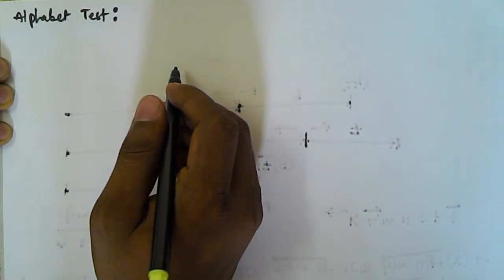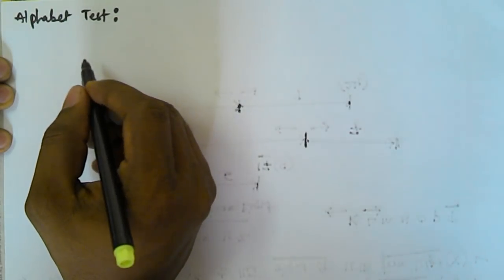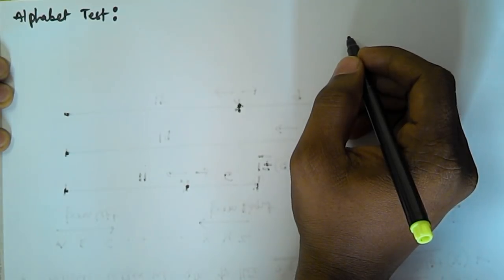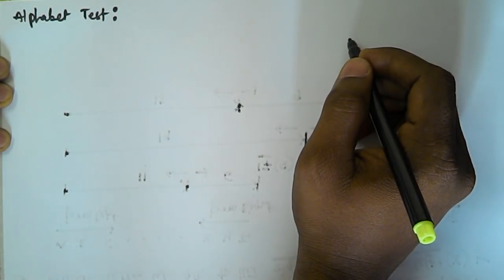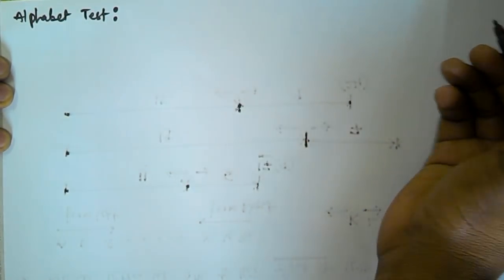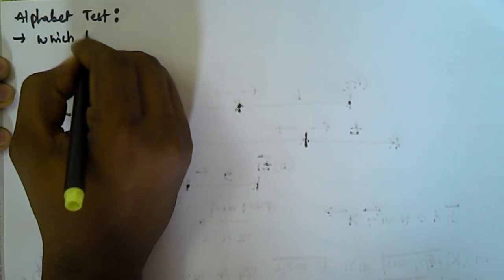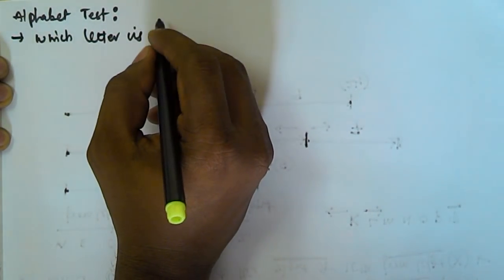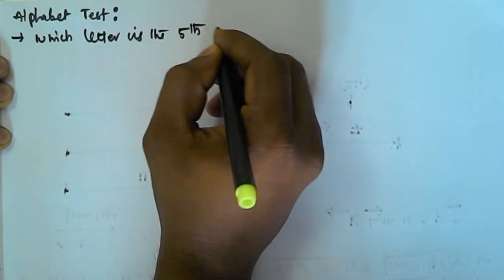Hello friends. In this video we will see another kind of alphabet test reasoning problems. So till now we have seen from left, from right, left-left-right-right, and right-left. Now we will see the left-right type.